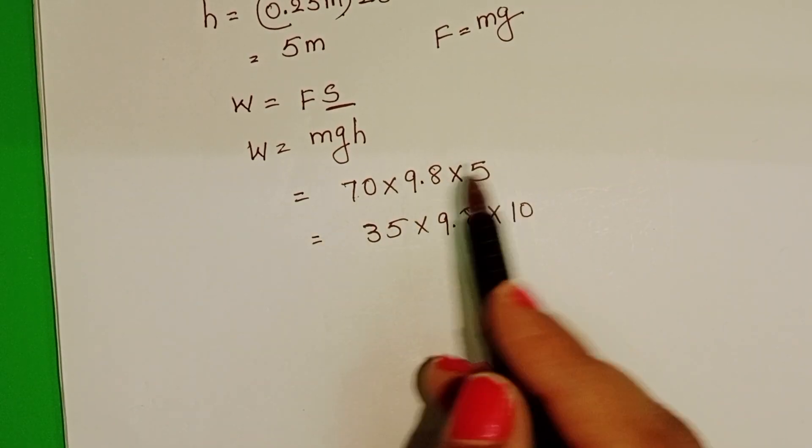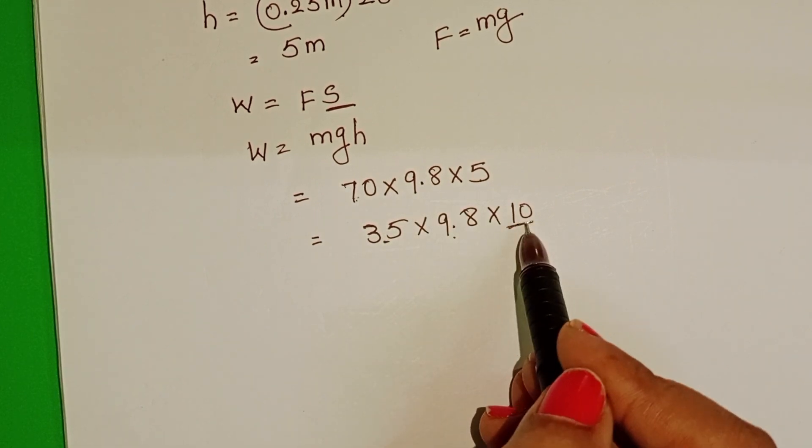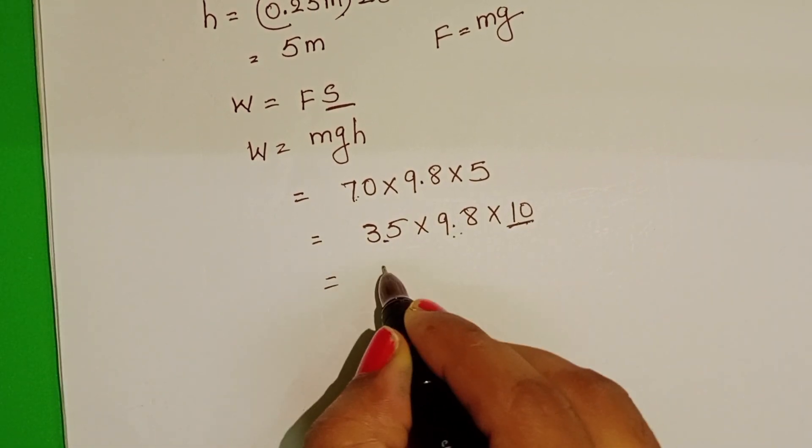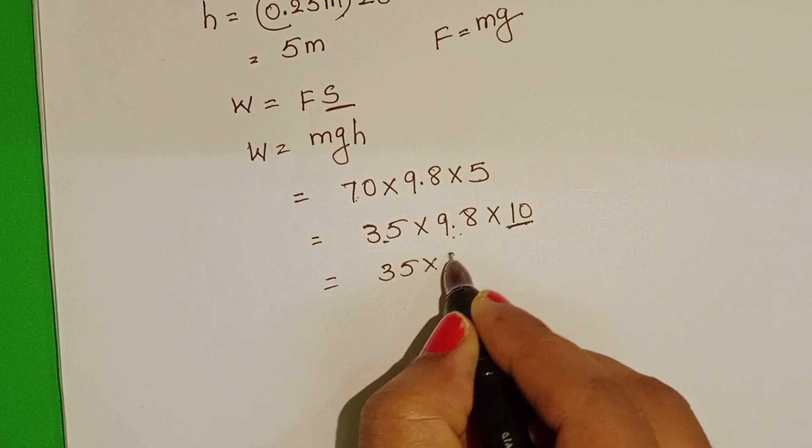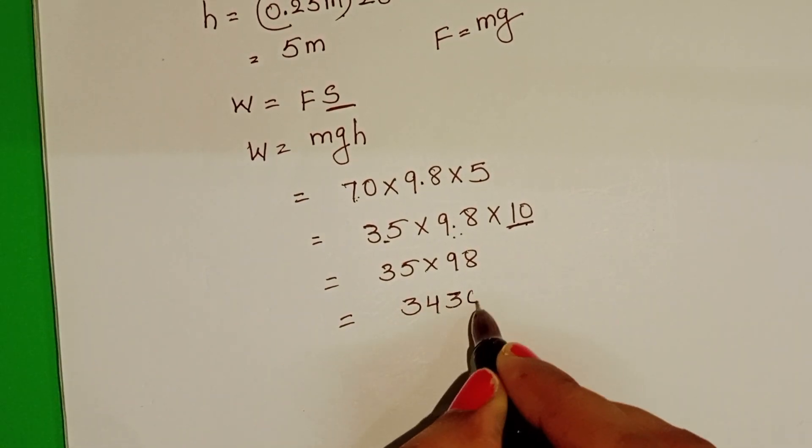Here, 70 is 7 into 5, which is 35. 9.8 into 10, when we multiply with this 10, it becomes 98. 35 into 98 equals 3430 joules.